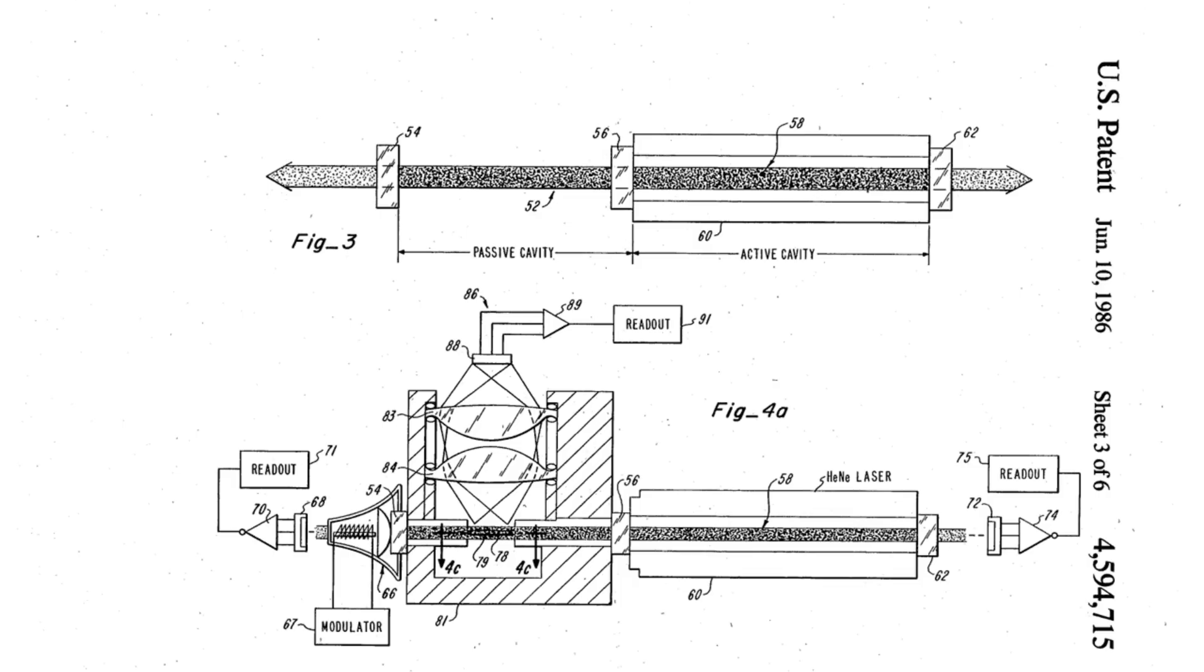We've got a really nice diagram on page 4 of the patent that shows exactly how this system works, and it is unbelievably simple. At the top, we've got a helium neon laser—62 is the high reflector and 56 is the output coupler where our little 5 milliwatt beam would emerge. Then 54, beyond that, is the third mirror that forms the passive cavity. In the diagram below, we've got an actual complete setup. 62 again is the high reflector, 56 is the output coupler, and 54 is the third mirror, and it is mounted in a speaker cone that's driven by a modulator.